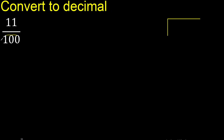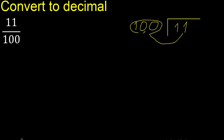11 divided by 100. 11 is less than 100, therefore complete — always complete with 0. Here: 0 point.